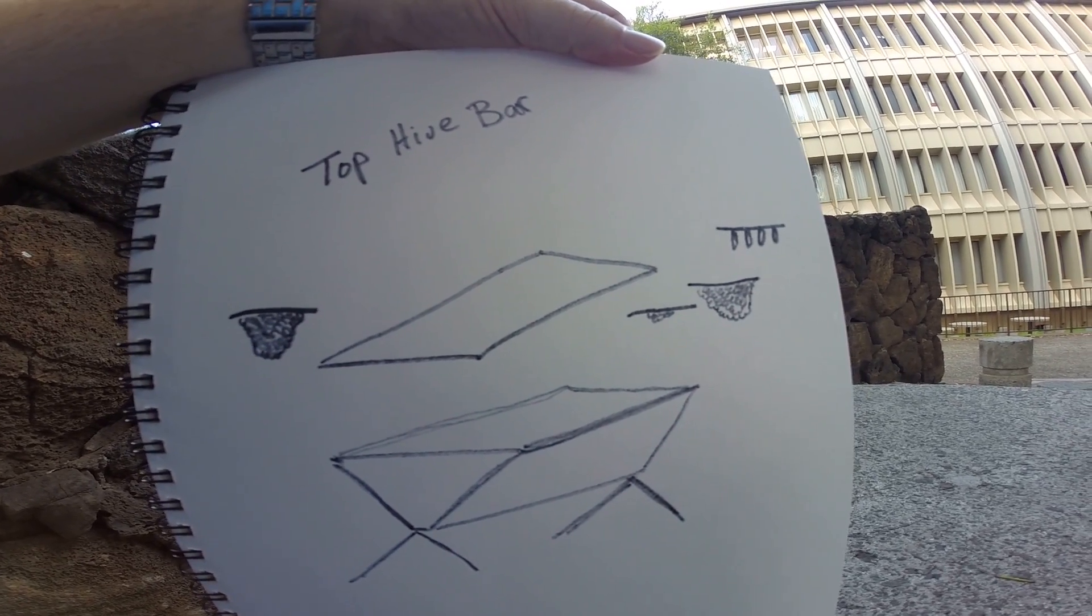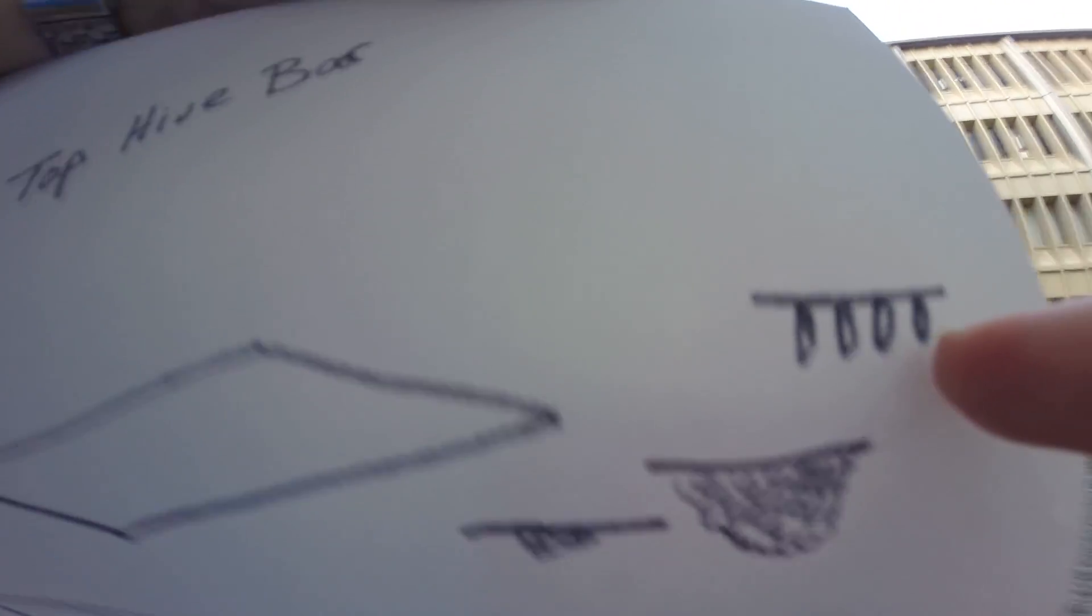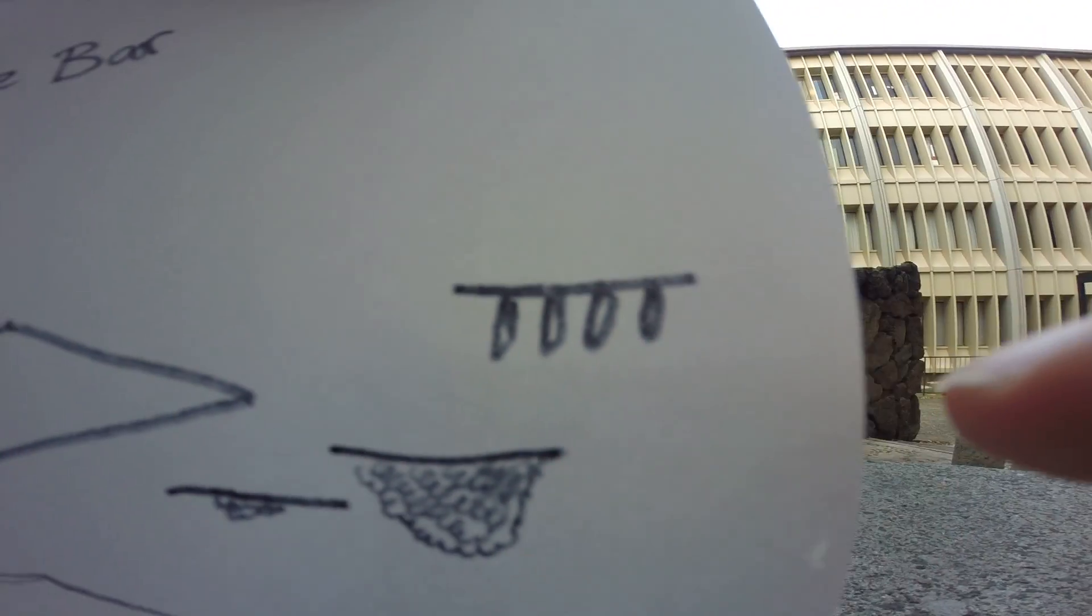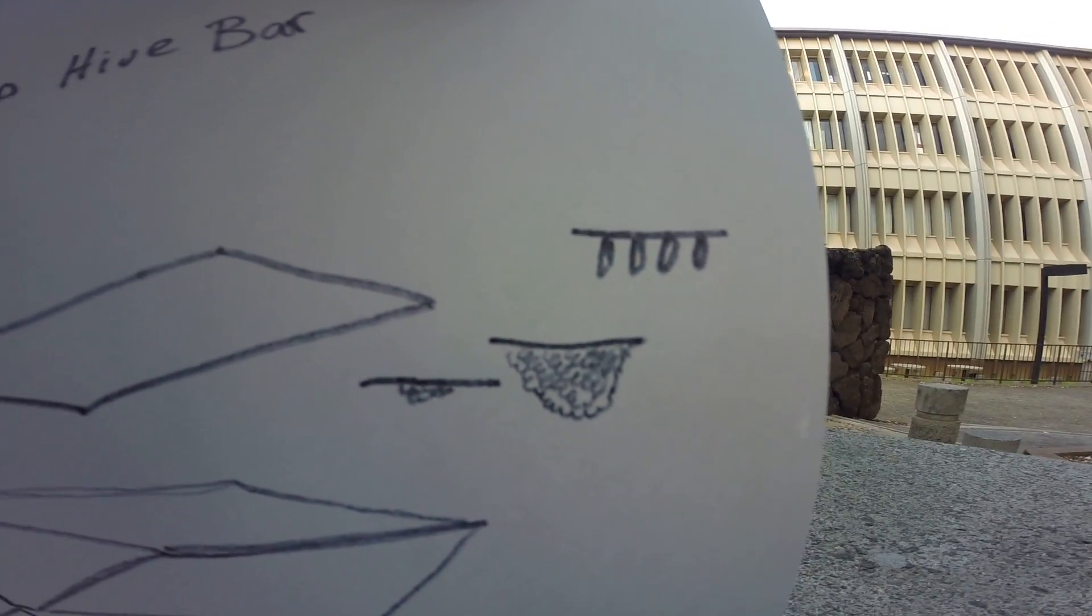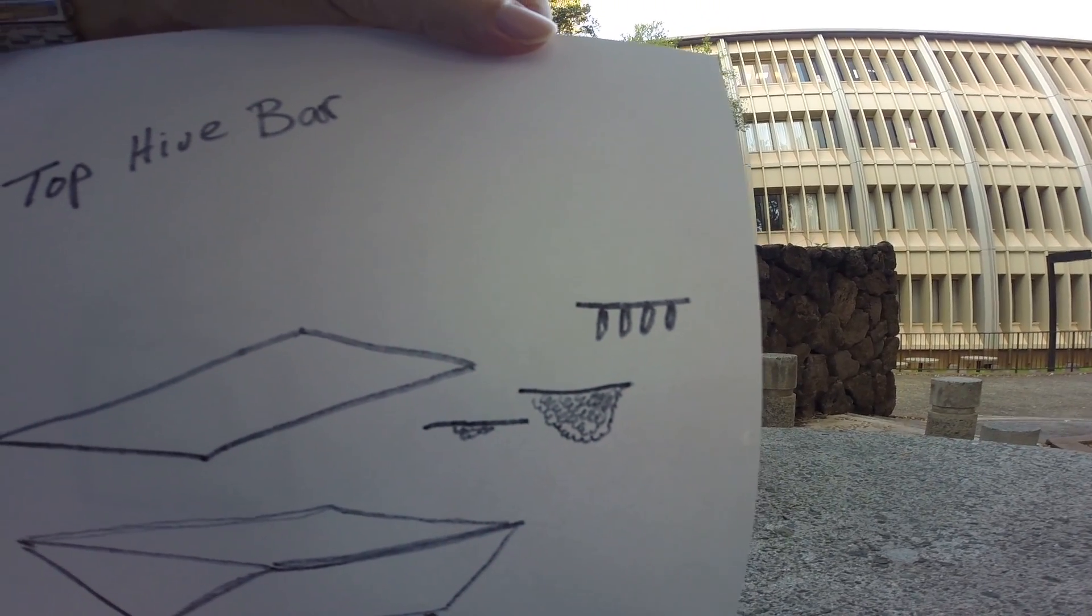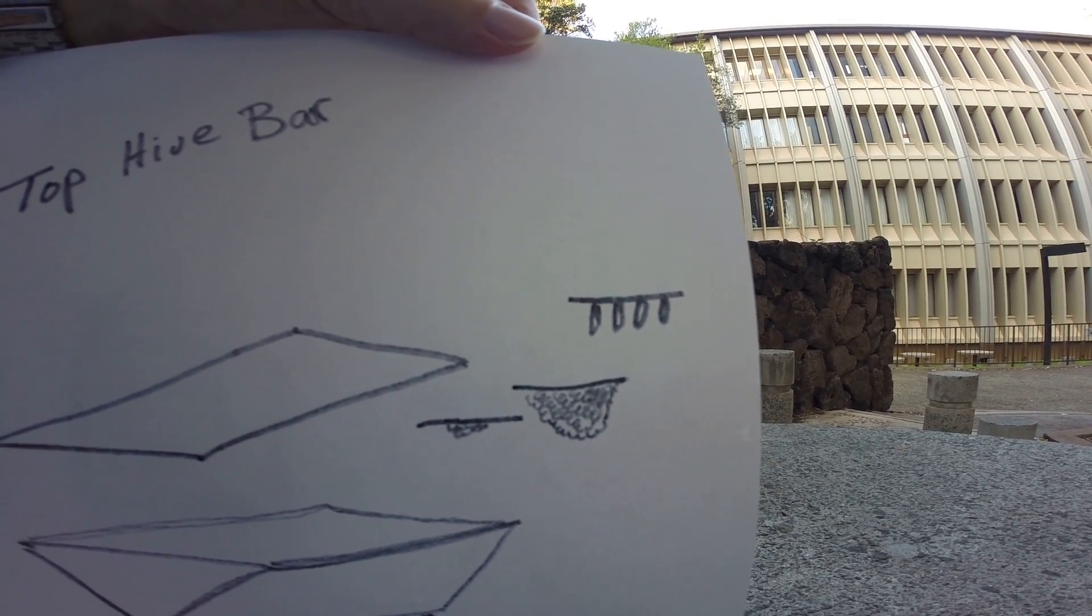It may promote swarms when you have bars like this. Queen cells may develop over time, making the colony more likely to swarm, which is a health and public safety hazard.